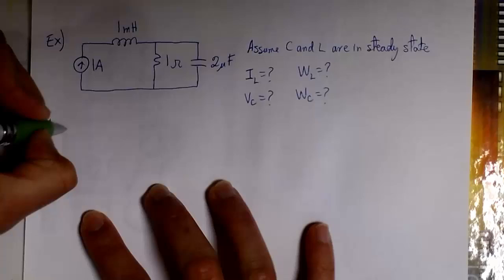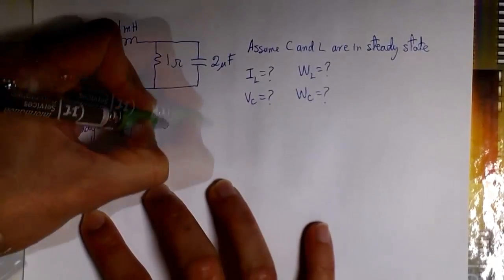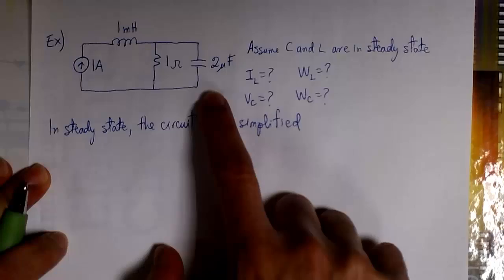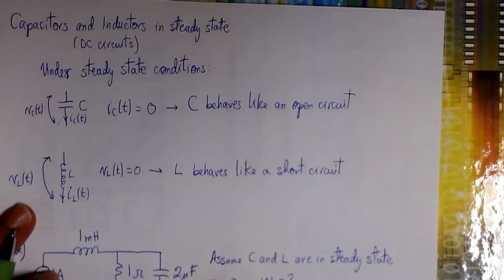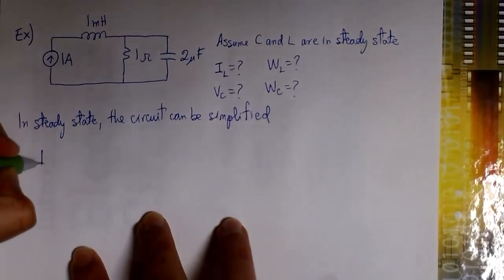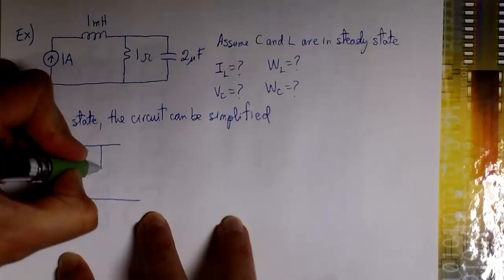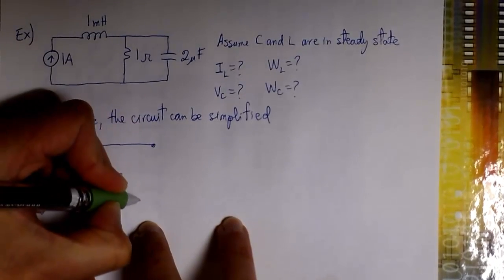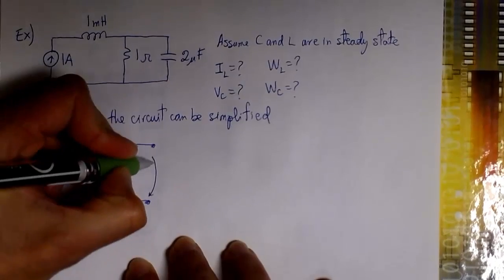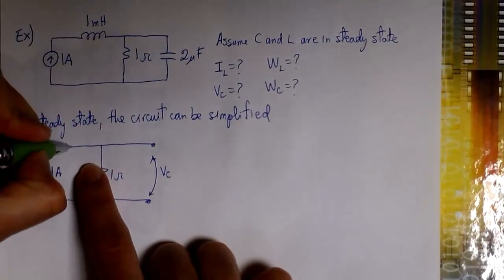Since we know that the inductor and the capacitor are in a steady state, we can simplify the circuit using the rules we mentioned before. The capacitor in steady state behaves like an open circuit, and the inductor in steady state behaves like a short circuit. So we redraw the circuit removing the capacitor and inductor, replacing the inductor with a short circuit and the capacitor with an open circuit. Here we have the 1 ohm resistor, and we can measure the voltage between the terminals of C and the current IL flowing through the inductor.